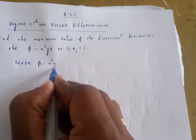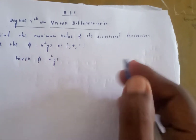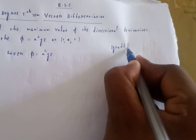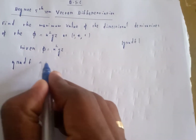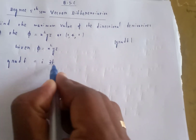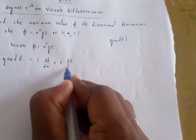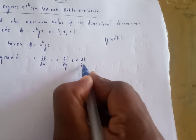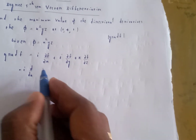Maximum value of the directional derivatives — also called greatest value of the directional derivatives — is equal to the gradient of phi: i times dou f / dou x plus j times dou f / dou y plus k times dou f / dou z.